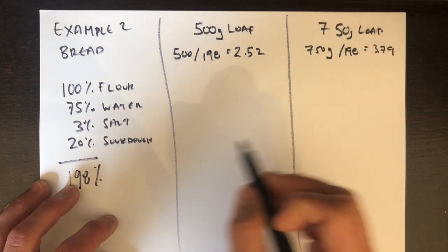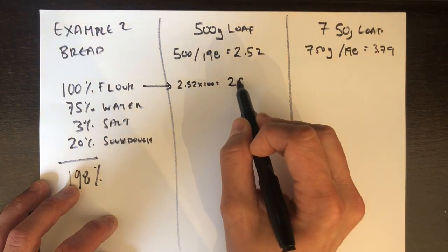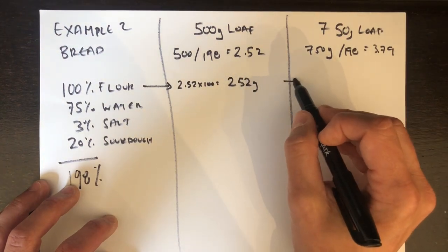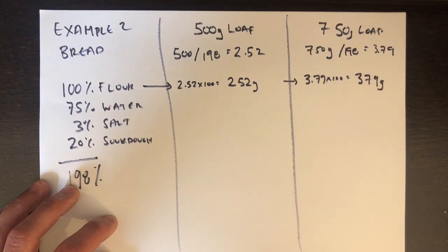And I'm just going to divide 500 and 750 by those numbers. So that's going to give me 2.52, which is going to give me 252 grams of flour for my 500 gram dough ball. And that's going to give me 379 grams for my 750 gram dough ball.